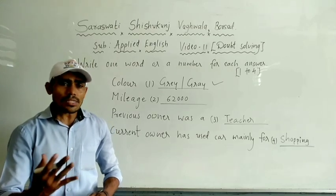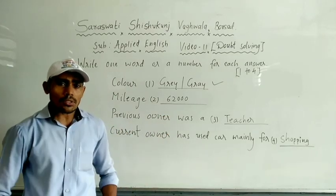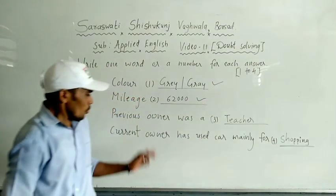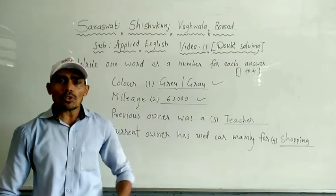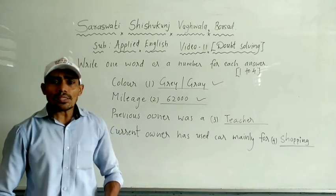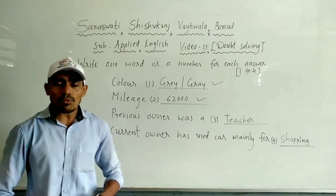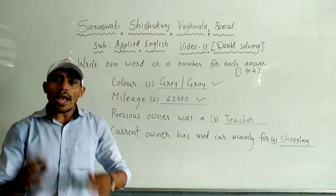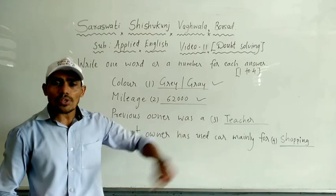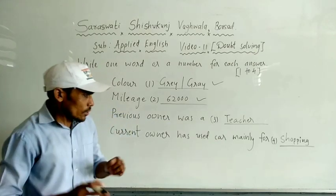About mileage, Brian says it's 62,000 on the meter. If you do listening very carefully, you get the correct answer. Then about previous owner, the lady wants to know the information. She asks Brian who was the previous owner? Brian says the previous owner was a teacher and the condition of the car is really good. So if you have heard very carefully, you got the correct answer.